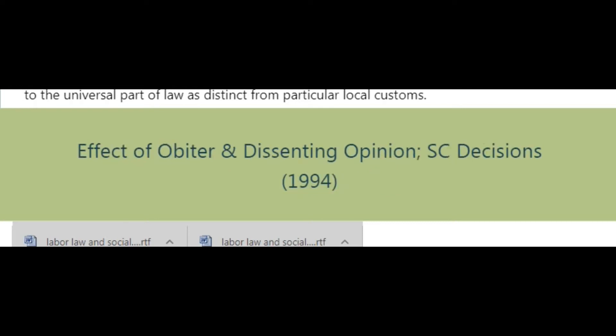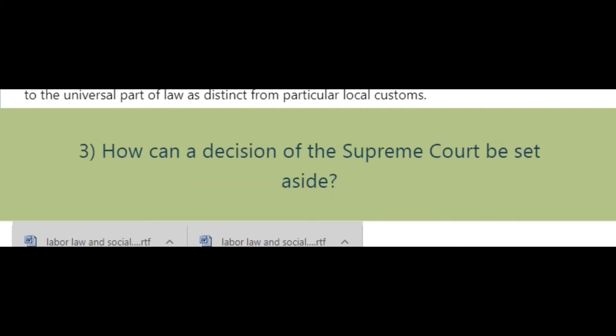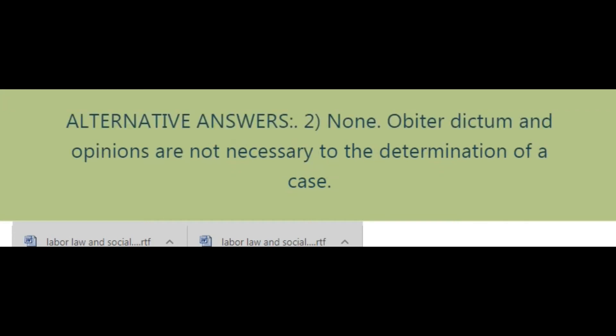Effects of obiter dictum and dissenting opinion — SC decisions, 1994. Question 2: What are the binding effects of an obiter dictum and a dissenting opinion? Question 3: How can a decision of the Supreme Court be set aside? Alternative answer to question 2: None. Obiter dictum and opinions are not necessary to the determination of a case; they are not binding and cannot have the force of official precedent.